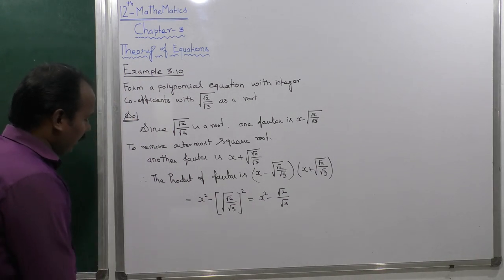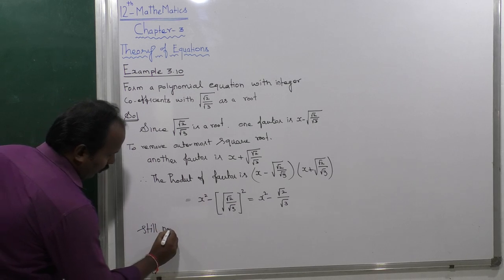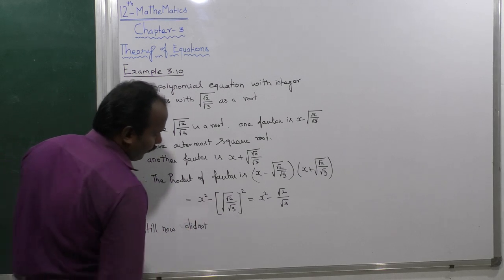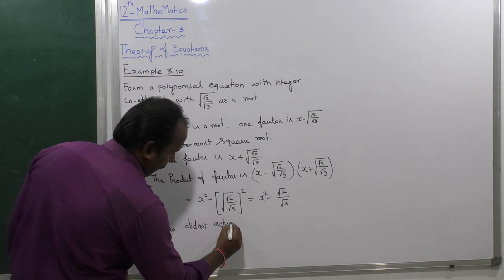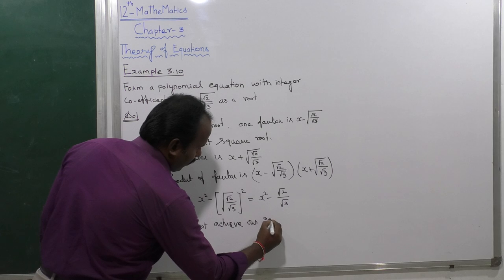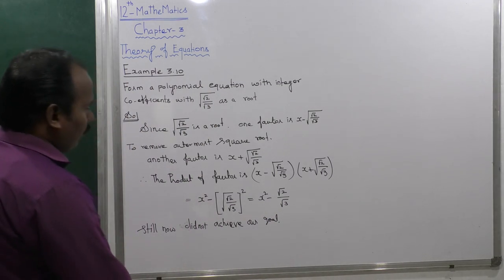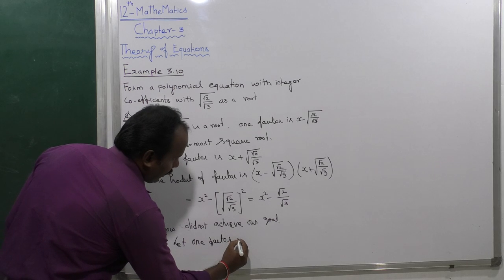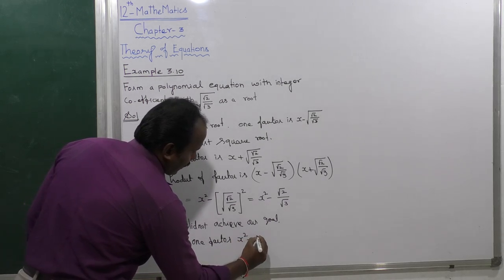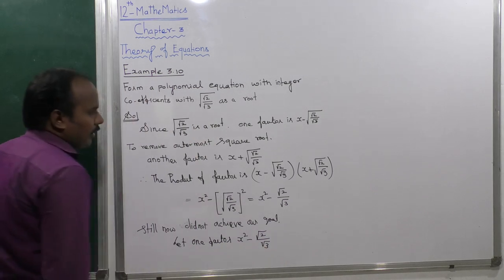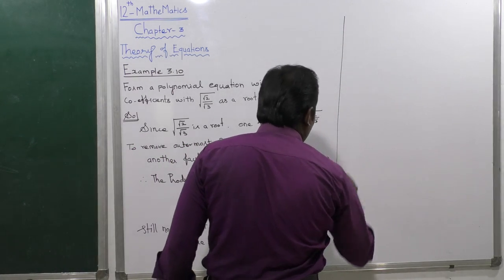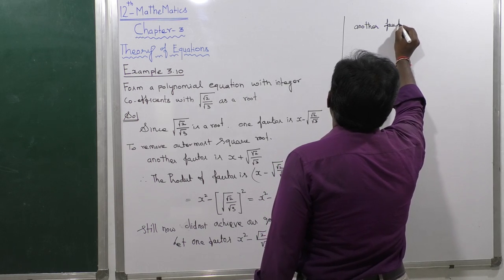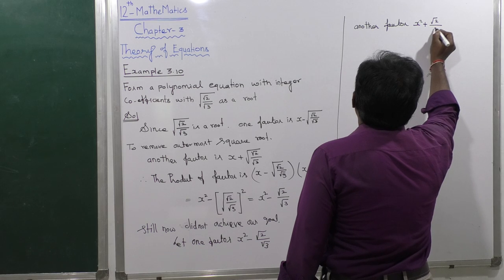Still now we did not achieve our goal. So to find it, let us take the one factor: (x squared minus root 2 divided by root 3). The another factor is (x squared plus root 2 divided by root 3).